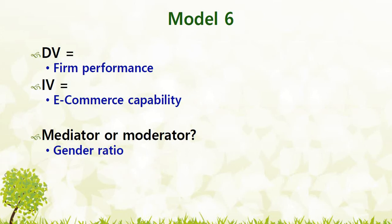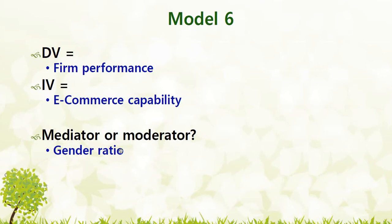Last example. Here the DV is firm performance and e-commerce capability is the IV. We have to find out whether gender ratio in the organization would act as a mediator or a moderator. It would not be logically true that capability may affect gender ratio, or that gender ratio may affect performance. So its relationship with the IV is least likely. This variable is more contextual in nature rather than causal in nature, so we conclude that it would act as a moderator, not as a mediator.